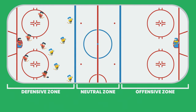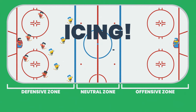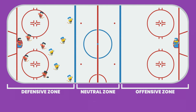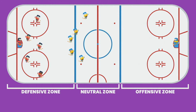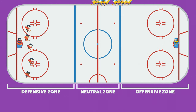Now let's tackle icing. Say you're in the defensive zone and you really want to get the puck out, so you slap it all the way down to the other side of the ice, past the opposing team's goal line — well, that's icing. Icing is whenever you send the puck to the other end of the ice when you're on your half of the ice, as in behind the red center ice line. When you ice the puck, play is stopped and the faceoff is sent back to your defensive zone.